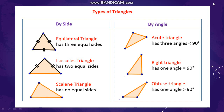An acute triangle is a triangle where all three angles are less than 90 degrees. So if you measure each angle it will be less than 90 — it might seem closer to 90 but not exactly 90. An acute triangle has all three angles less than 90 and will have three acute angles in it.